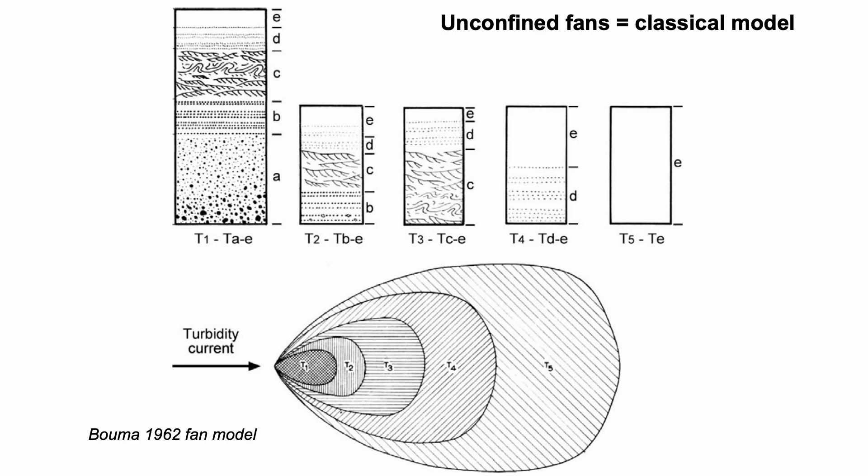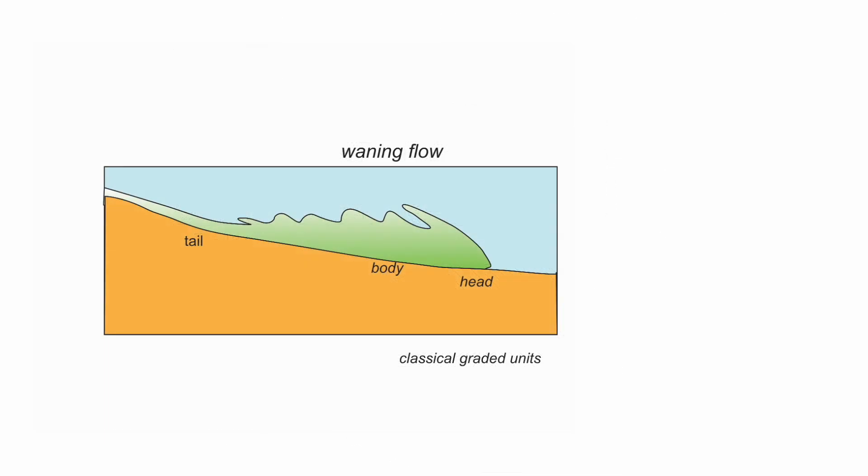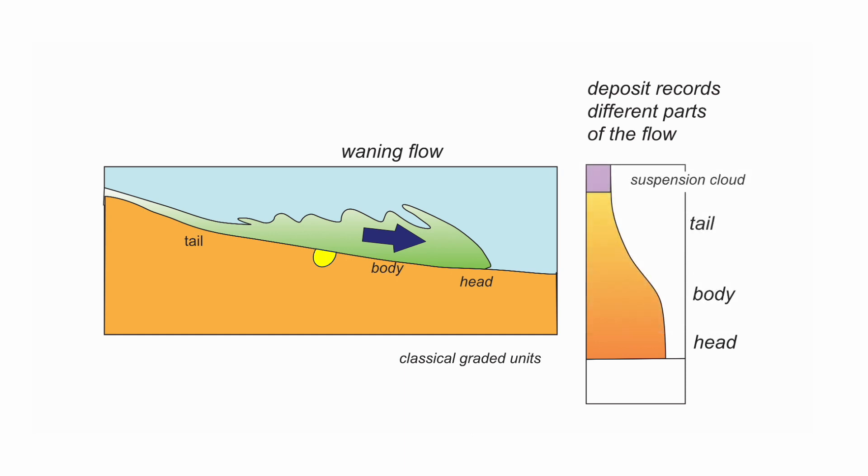But Boumer's ideas were based on the notion that a turbidity current simply decelerates and wanes, its capacity to carry sediment simply declining through time. Sedimentary rocks, the deposits, sample this behaviour at a point on the seabed, and as the flow wanes it deposits progressively finer sediment, leaving behind a simply graded bed that fines upwards.